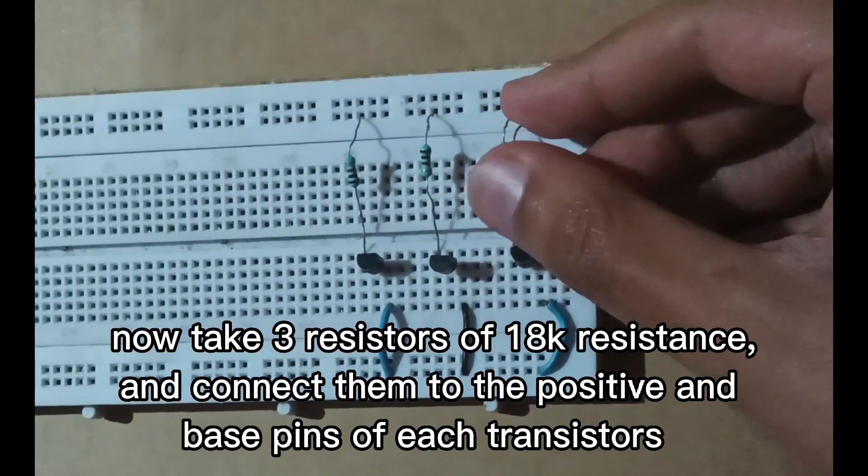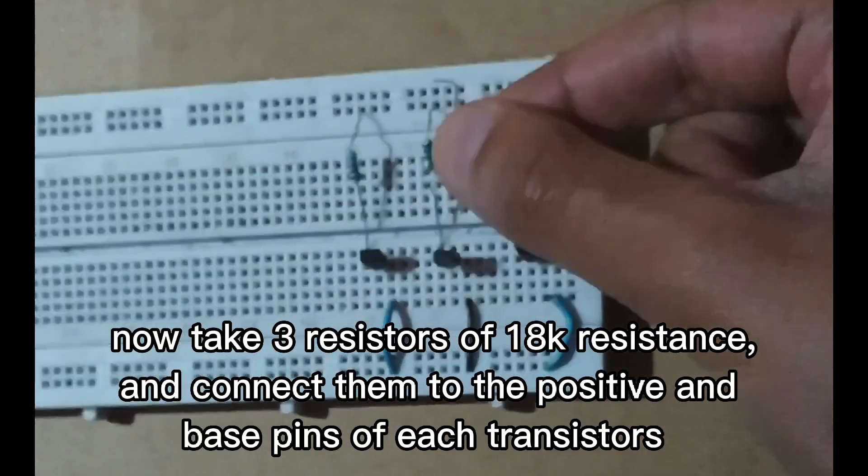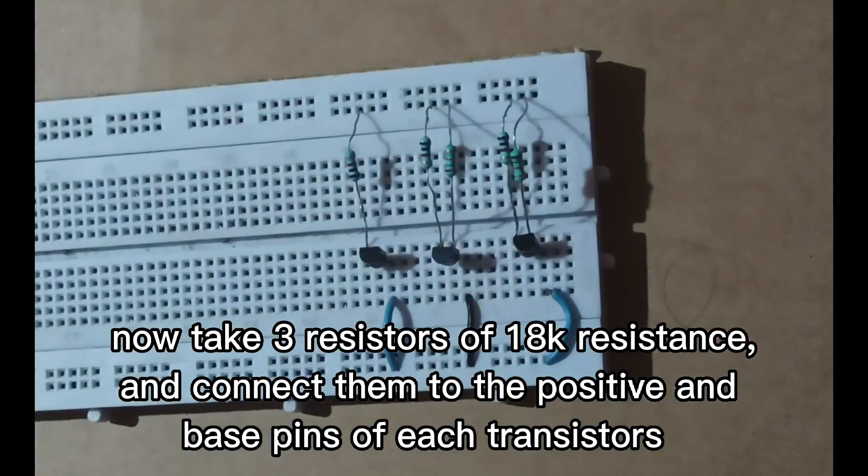Now take three resistors of 18,000 ohm resistance and connect them to the positive and base pins of each transistor.